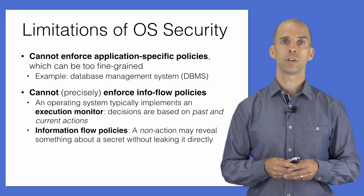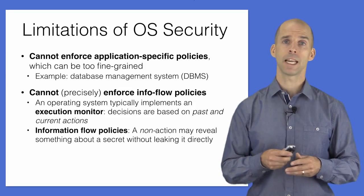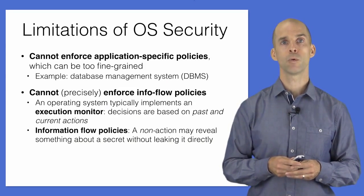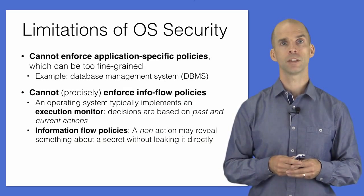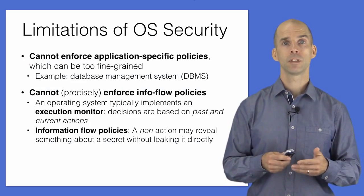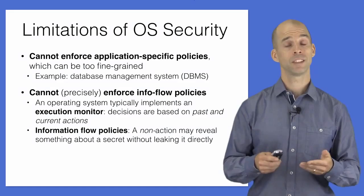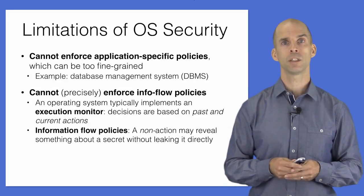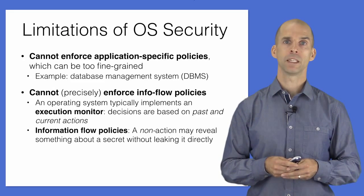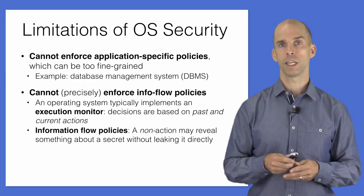Operating systems are also unable to enforce certain kinds of security policies. Operating systems typically act as an execution monitor, determining whether to allow or disallow a program action based on current execution context and prior actions. However, there are some kinds of policies, such as information flow policies, that cannot be enforced precisely without consideration of potential future or non-actions. Software-level mechanisms can be brought to bear in these cases, perhaps in cooperation with the OS. We will consider information flow policies in more depth later in this class.